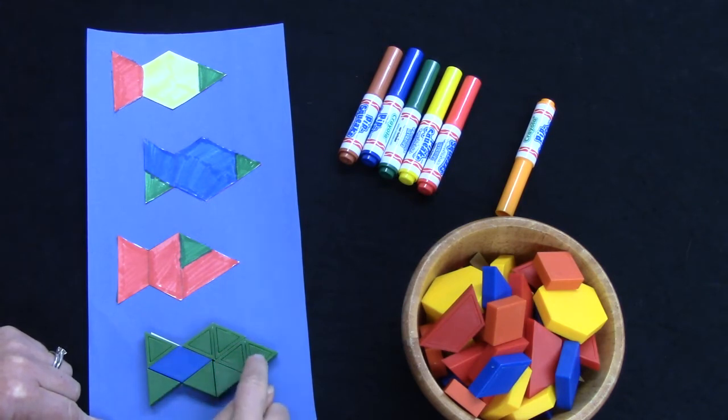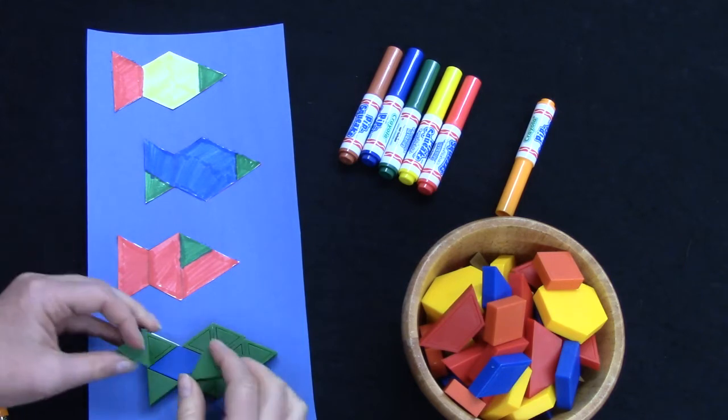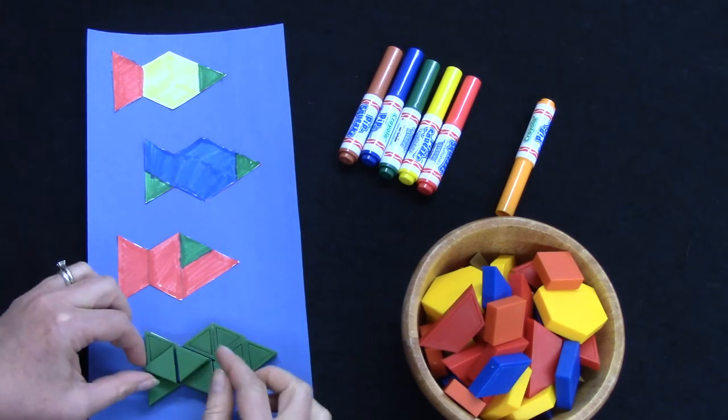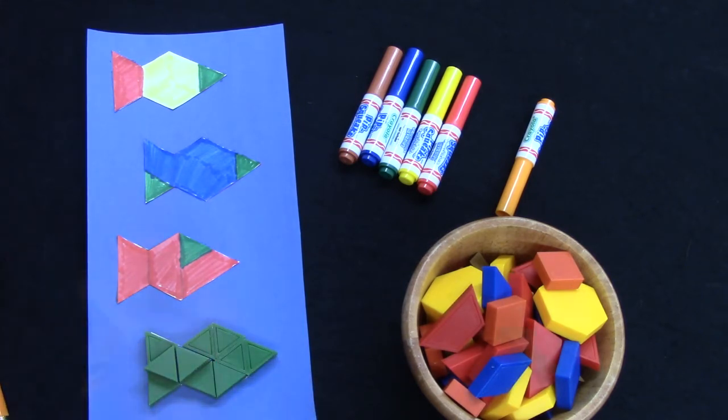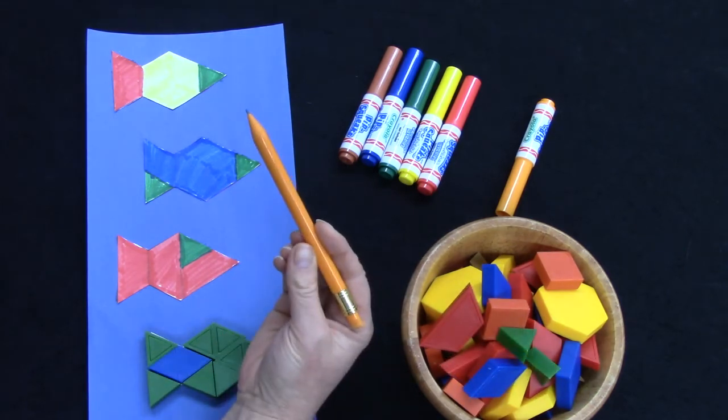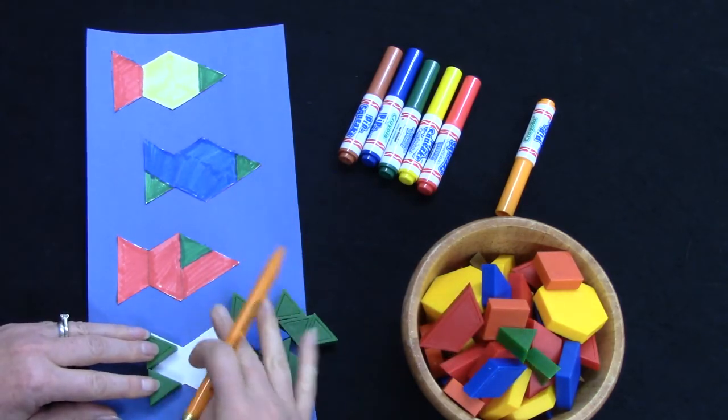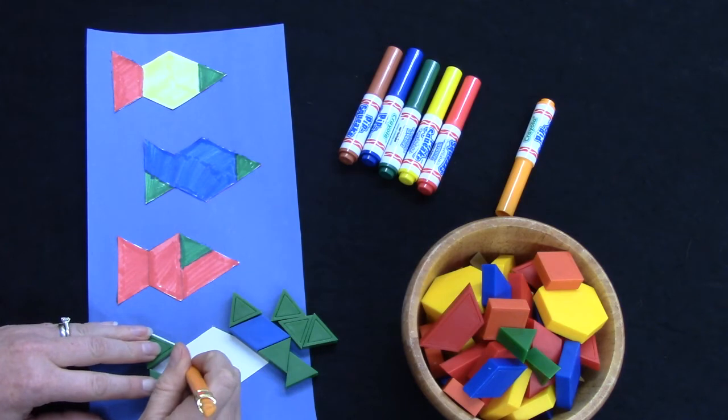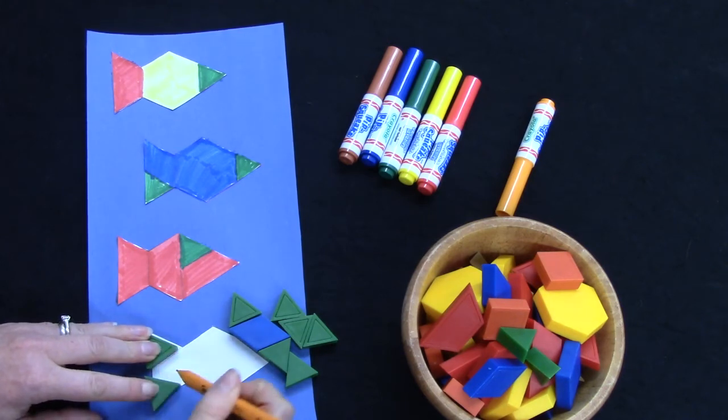I covered my design with lots and lots of triangles: one, two, three, four, five, six, seven, eight triangles and one rhombus. I could have covered all of them with green. I am going to use my pencil to trace my shapes and color them.